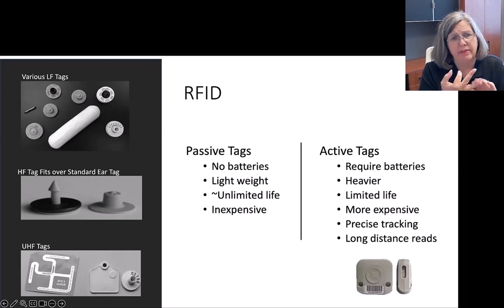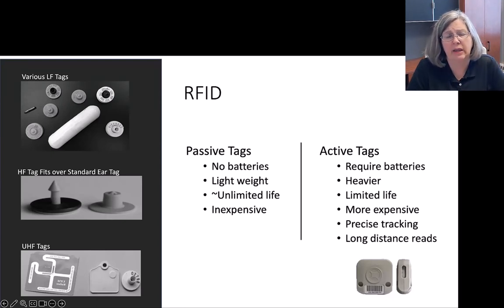Active tags have tremendous opportunities. They do require a battery, they are heavier with a battery, they have a limited life, they're quite a bit more expensive. I'm not sure we're ready for prime time on those, but they do allow for precise tracking sort of like an indoor GPS and we can have really long reads with those. When we look at passive tags there are several different frequencies. For animals we really look at low frequency tags, although they are looking at high frequency and ultra high frequency for some applications, but we really are sticking with that low frequency tag, the ones that are most common in livestock today.